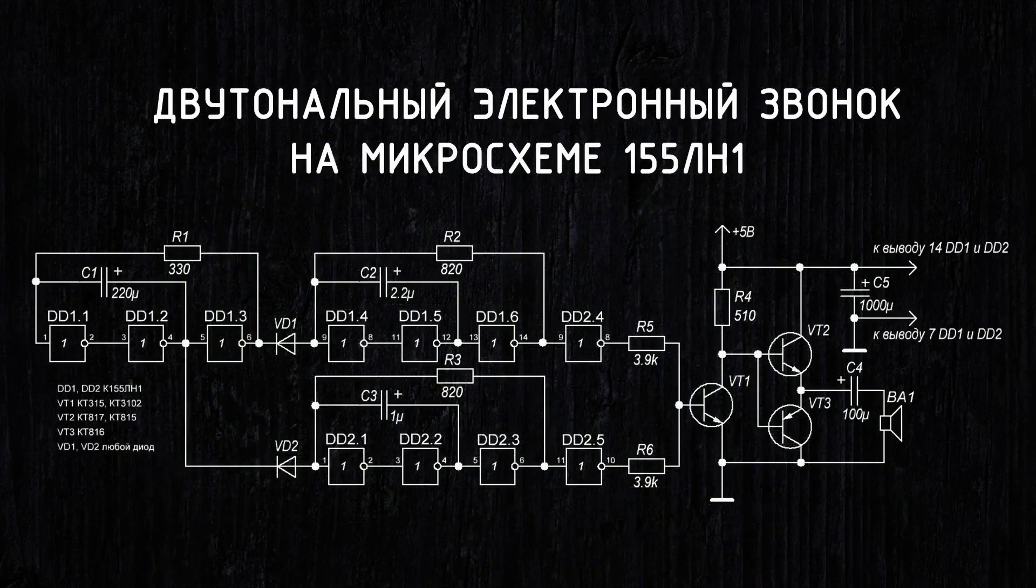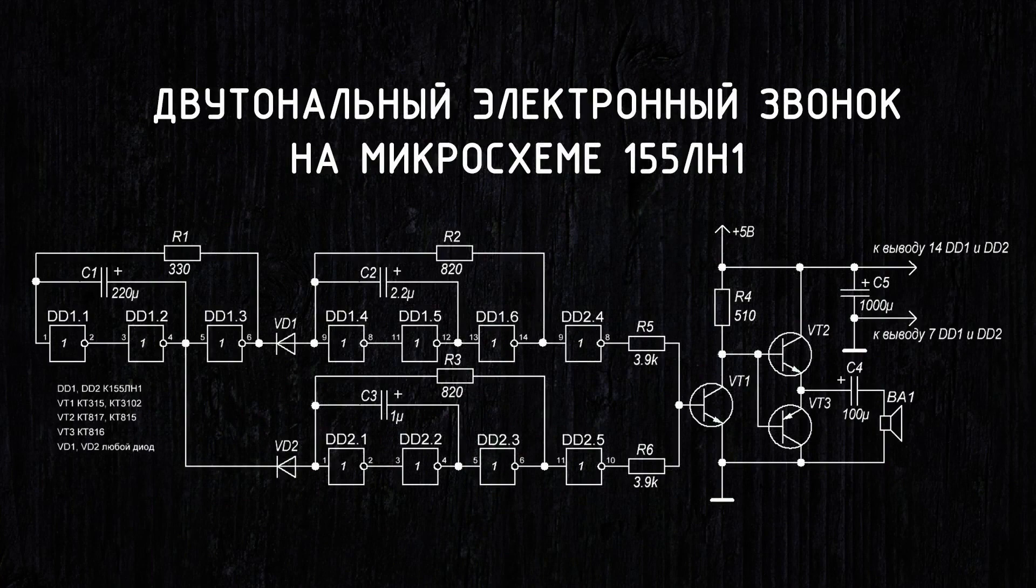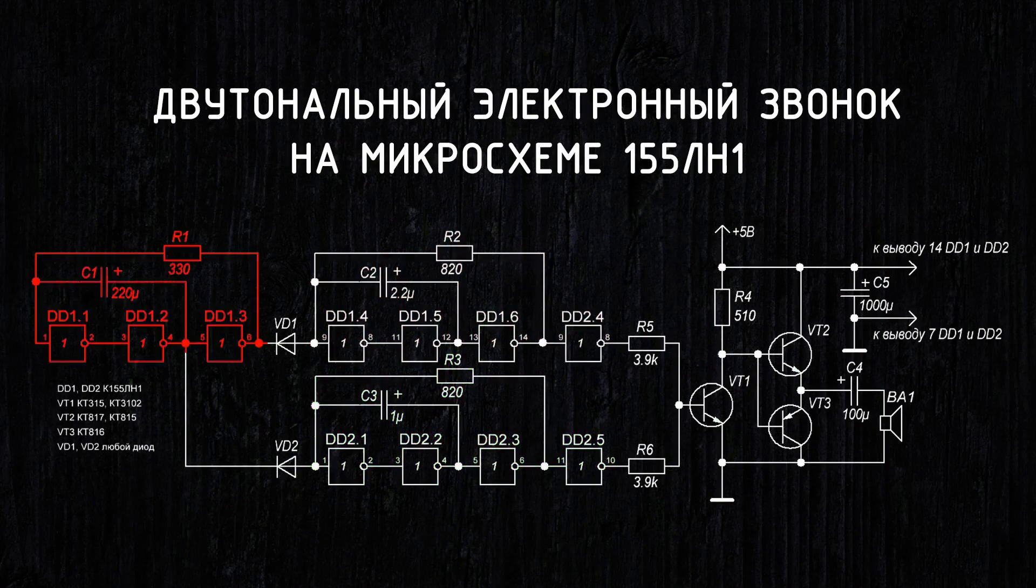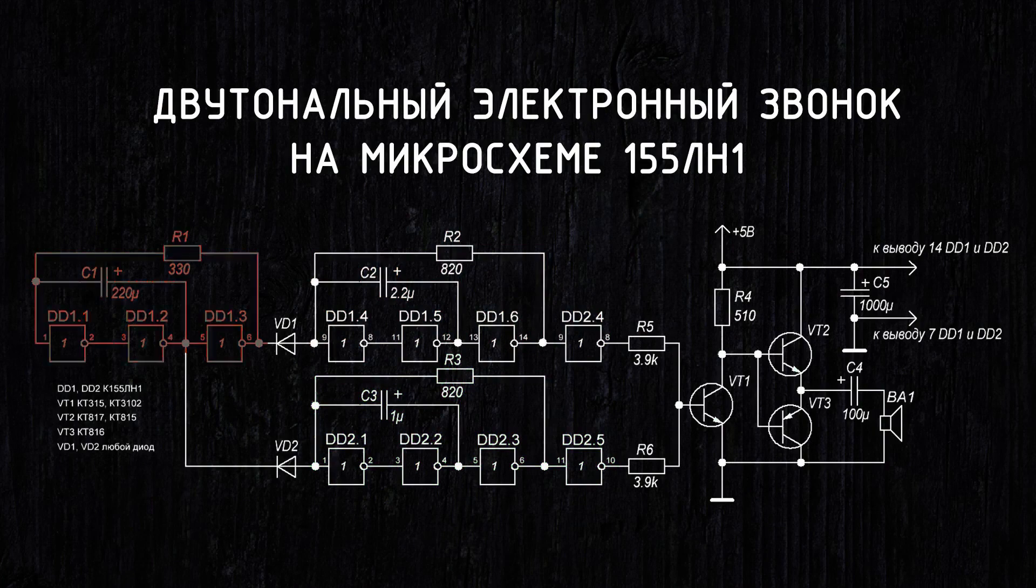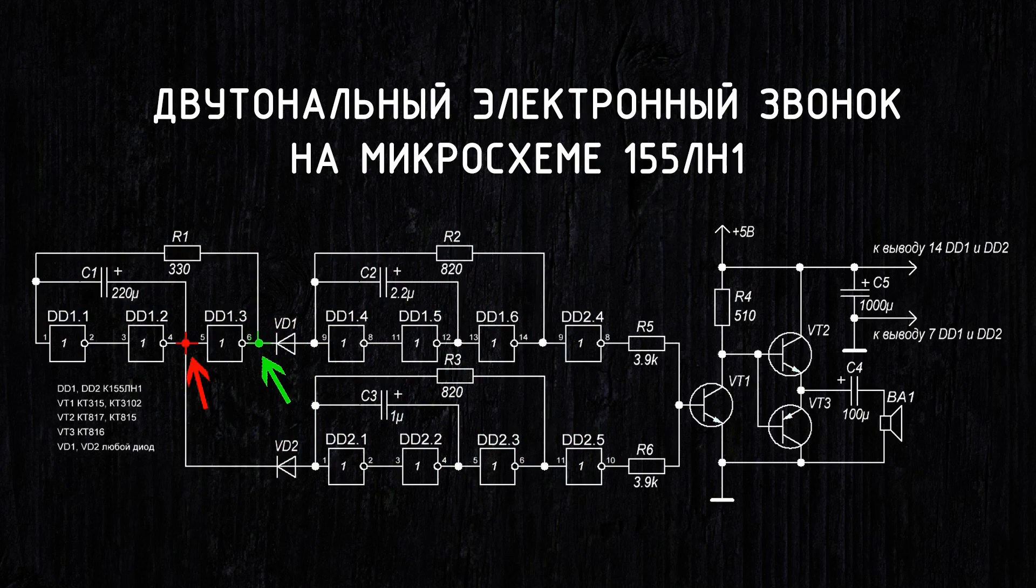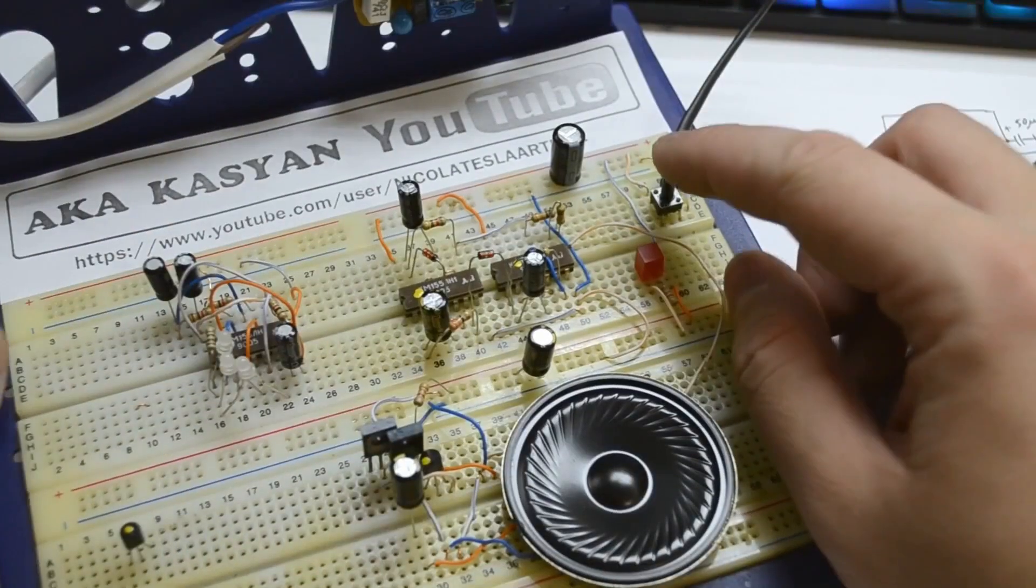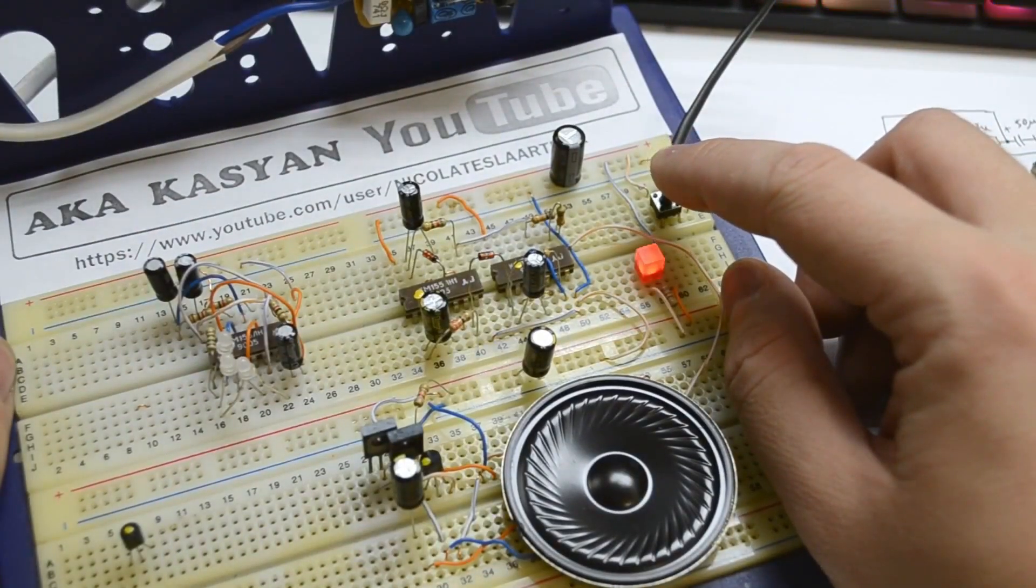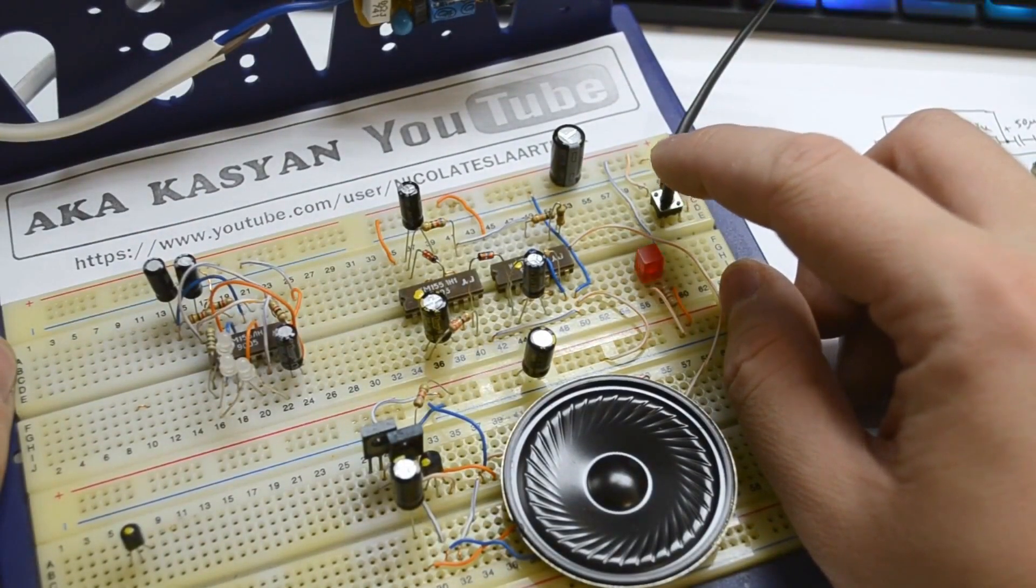The schematic consists of three generators, two of which generate sound tones, and the third switches between these tones. For this, the inputs of the sound generators are connected through diodes to the third generator. The voltages at these points are always opposite because this is a negation element. Therefore, the tone generation from one generator or the other will alternately be disrupted through the diodes. As a result, you get an interesting sound that entirely depends on the three RC circuits.